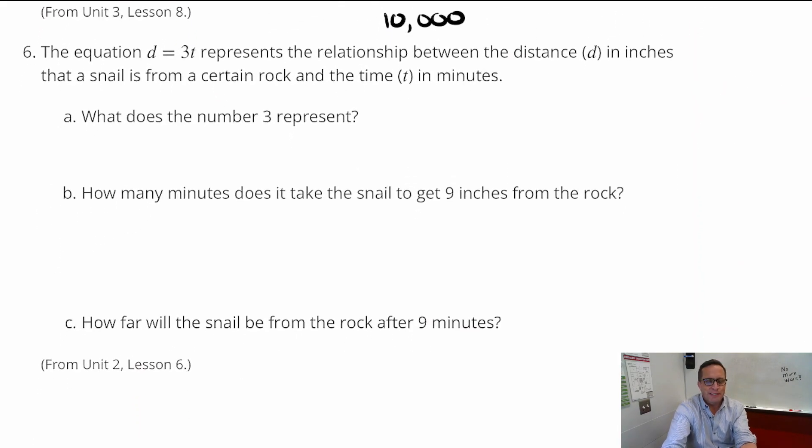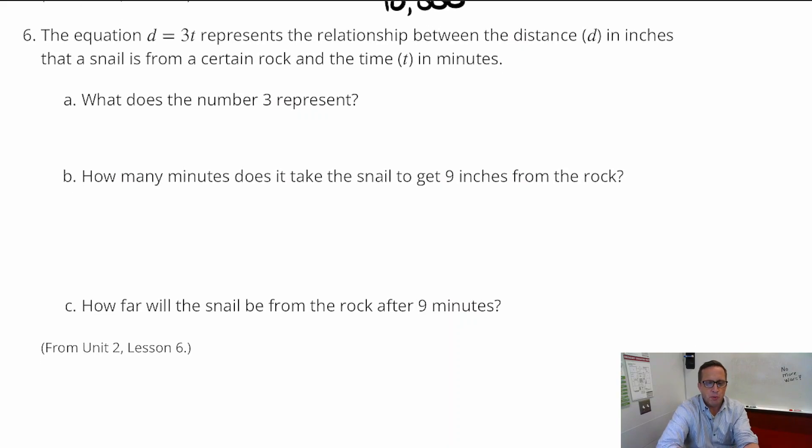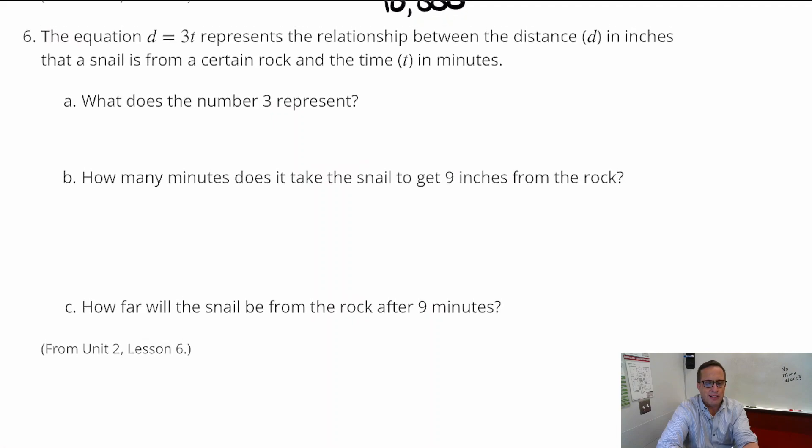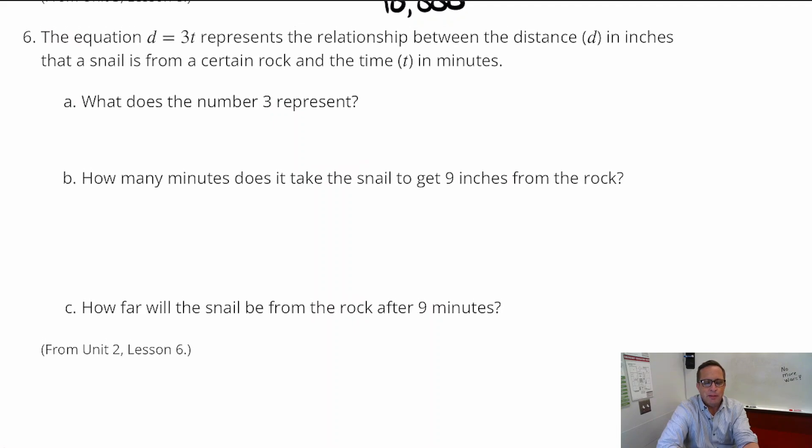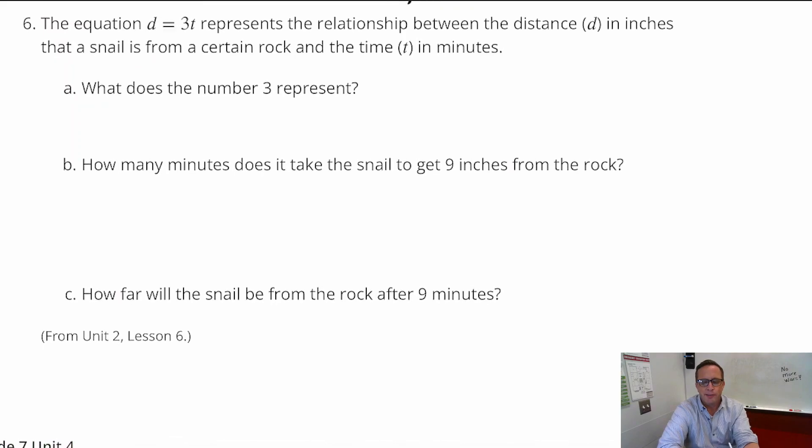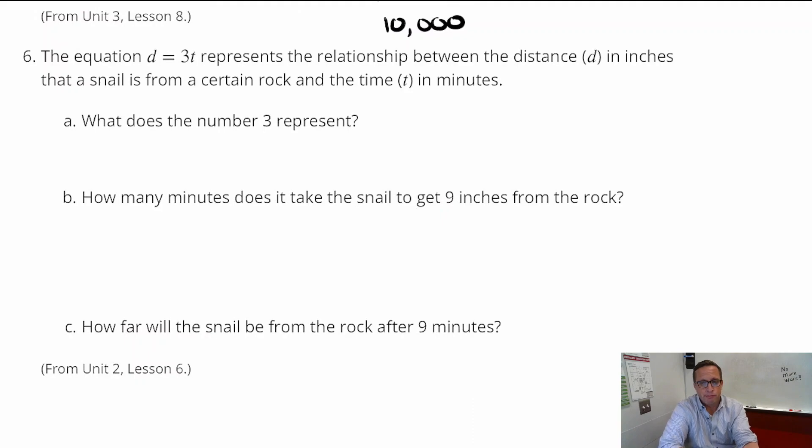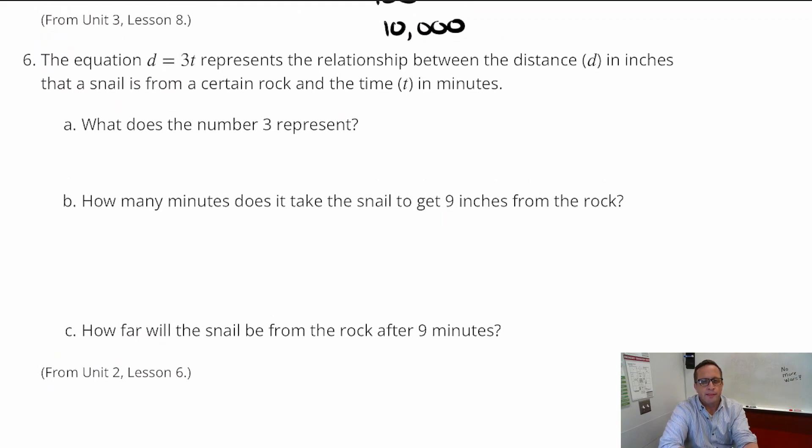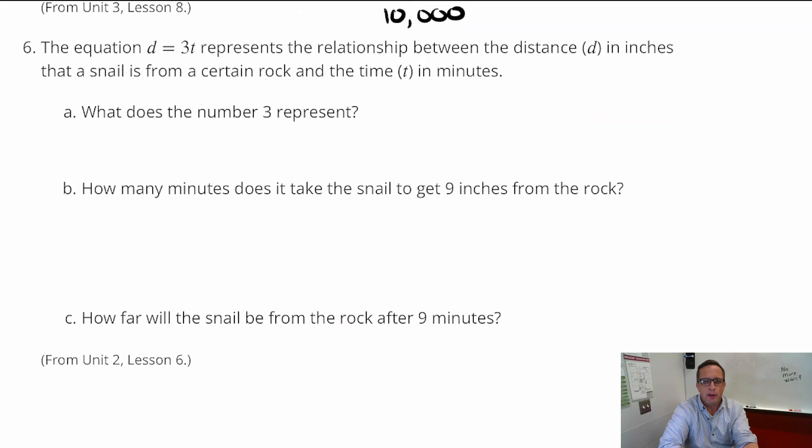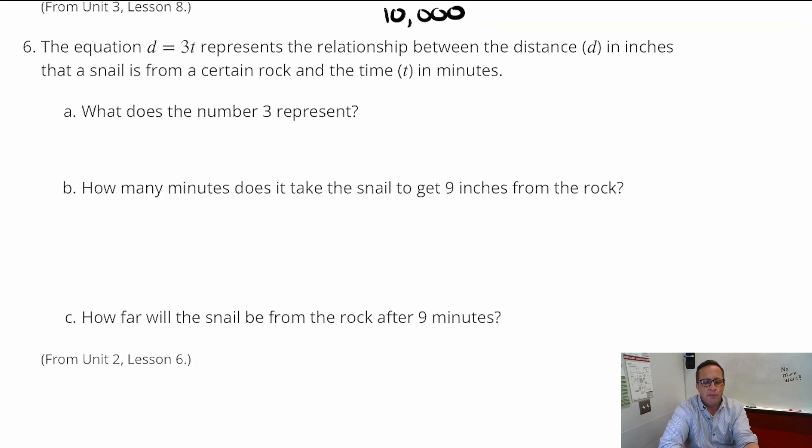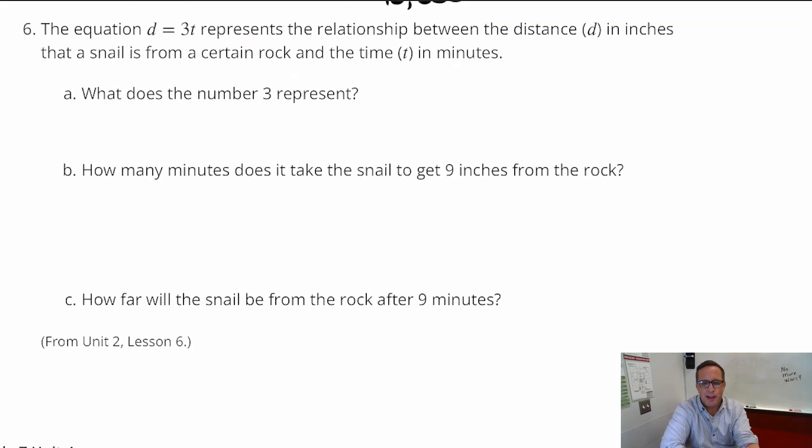Number 6. The equation d equals 3t represents the relationship between the distance, d in inches, that a snail is from a certain rock, and the time, t, in minutes. What does the number 3 represent? What does the number 3 represent? So, we've got this y equals kx equation. So, 3 is definitely the constant of proportionality. That's easy to say. Constant of proportionality. What does that mean, though? What does that mean?